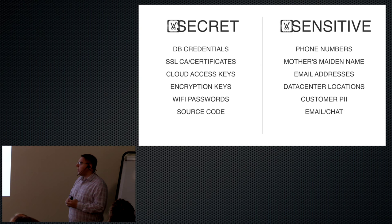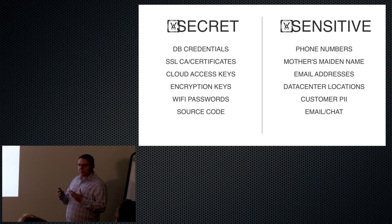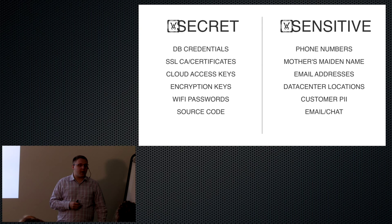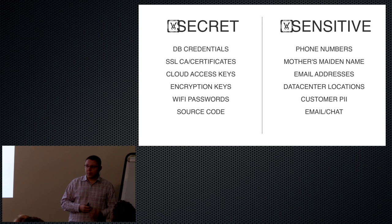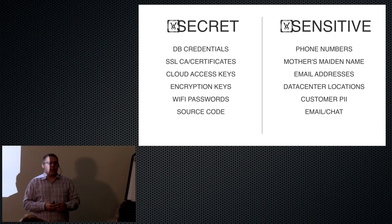Things like data center locations — it doesn't seem too terrible to know we're in Arizona somewhere. Customer personally identifiable information like home addresses, phone numbers, anything that uniquely identifies a customer. And things like email and chat, our Slack, our internal communications — how well do we secure those? My laptop is sitting over there unlocked. Someone could walk up, press the escape key, and access my company email or company chat.